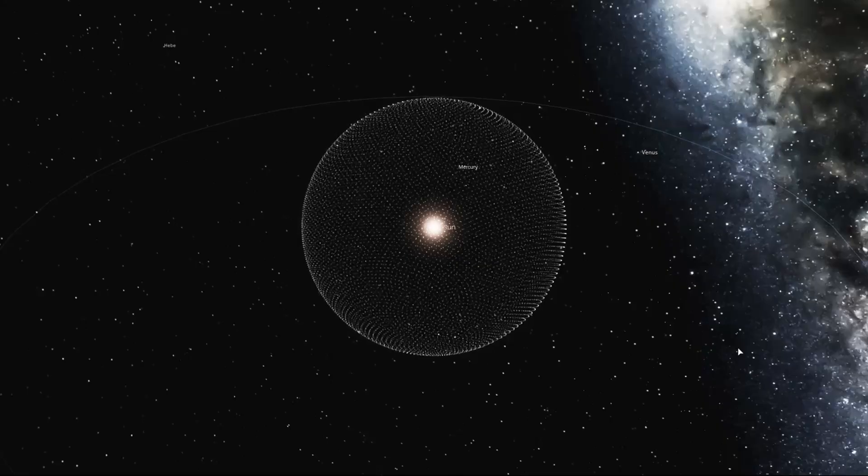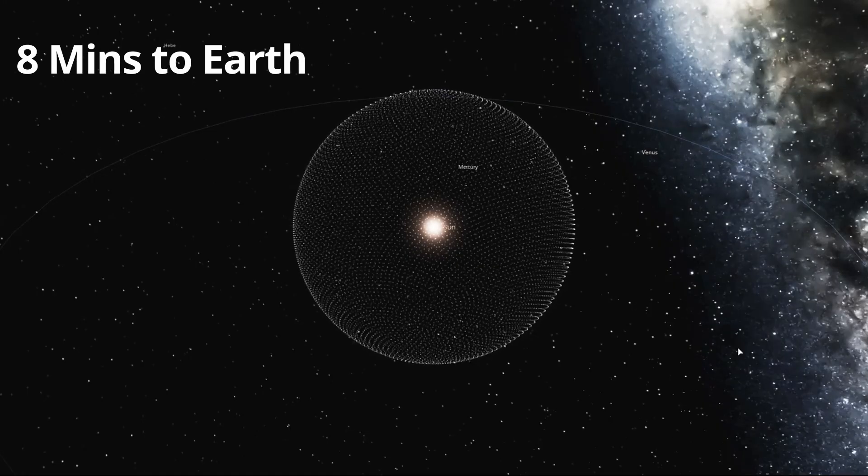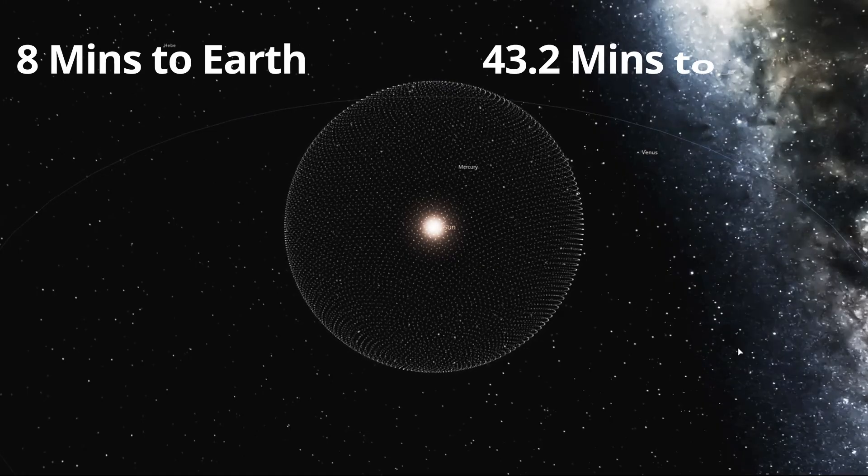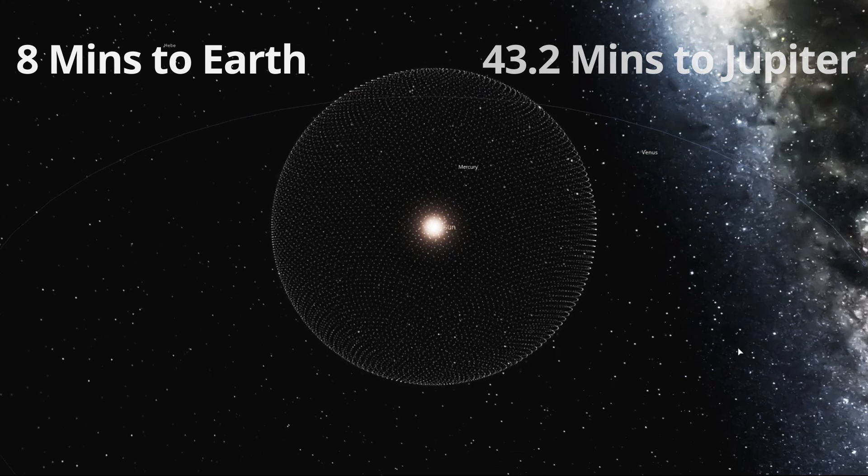It takes 8 minutes for sunlight to reach Earth and 43.2 minutes to reach Jupiter. Light is fast, but the distances are vast.